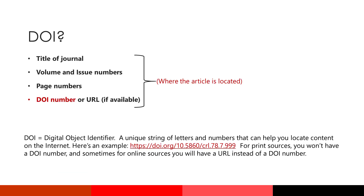At this point you may be asking, what is the DOI number? The DOI number is part of your where-the-work-is-located information, and DOI stands for digital object identifier. It's a unique string of letters and/or numbers that helps you locate digital information on the internet. Since it only applies to digital content, print articles you find won't have a DOI. For some sources, you will use a URL instead of a DOI.